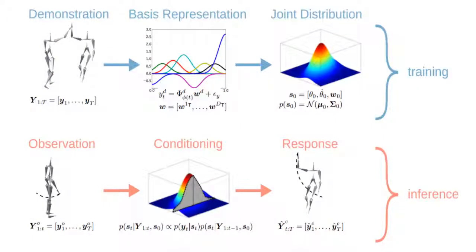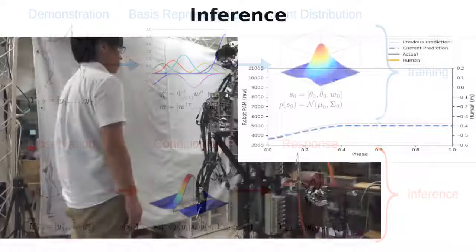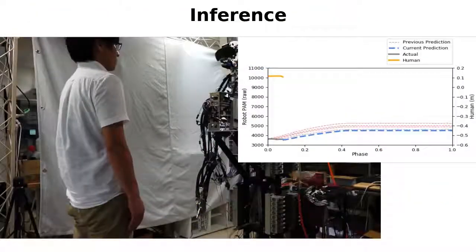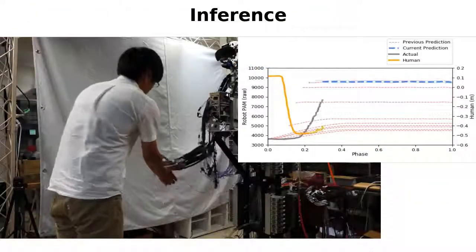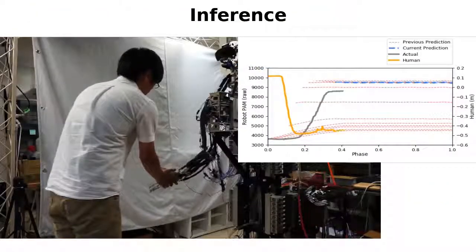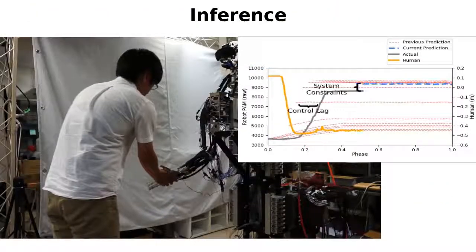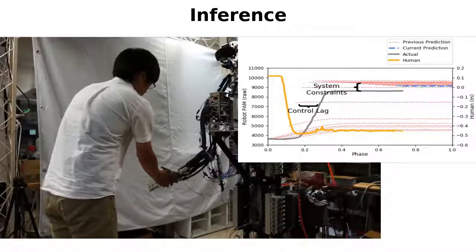These demonstrations are used to form a spatiotemporal model of the interaction with the Bayesian Interaction Primitivist Framework. The learned probability distribution is conditioned on observations of the human so that we can generate an appropriate robot control trajectory.